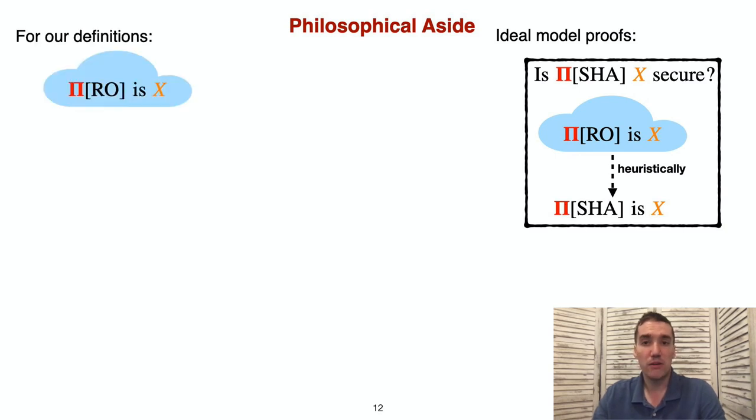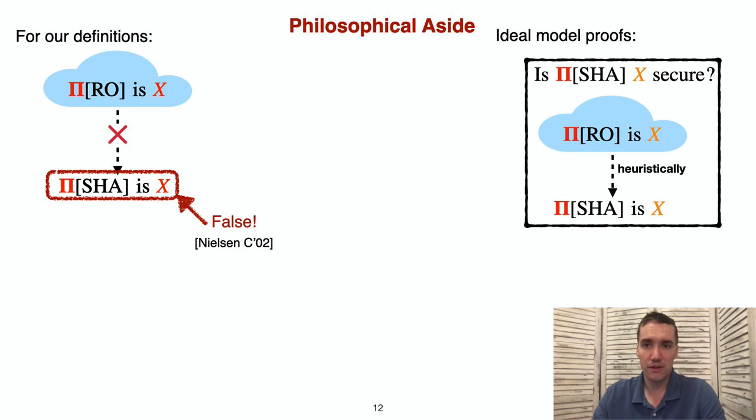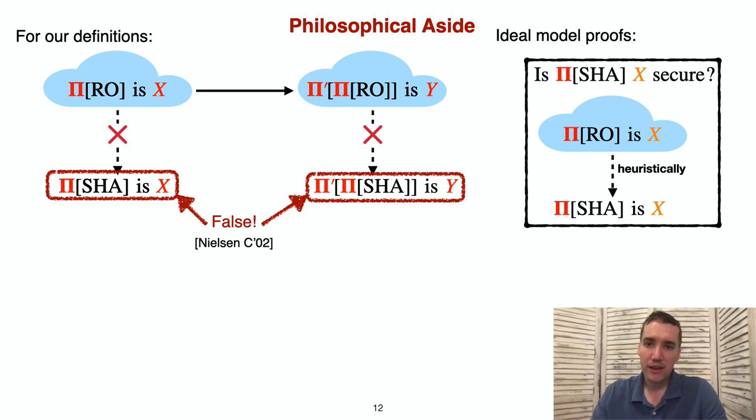If we try to apply this to our result definitions, say, thinking of x as being SimACCPA security, then we run into a problem. In particular, the techniques of Nielsen that we discussed earlier will extend readily to rule out the possibility of any standard model scheme achieving our notion. Well, okay. How about this? We used our scheme and our assumption that it achieves some notion x to imply that some higher level protocol, pi prime, achieves a notion y. Can we at least use our proofs to heuristically assume that pi prime achieves y when the random oracle is instantiated? Unfortunately, no again. At least for the applications we considered, Nielsen is again here to ruin our fun. This leaves us with something of a conundrum. What's the point of all of the results that we showed in our paper? If there's no corresponding standard model assumption, we can be assuming when we instantiate a random or ideal cipher.